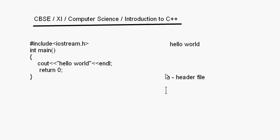Whenever we write a program, the basic purpose is to show some output — process something and give some output. For that processing we also need to take some inputs. Input and output is one of the most basic things in every program. So in every program we will have to include iostream.h. If you don't include it, all the lines which contain input or output will produce an error.